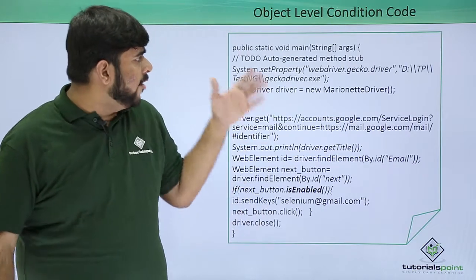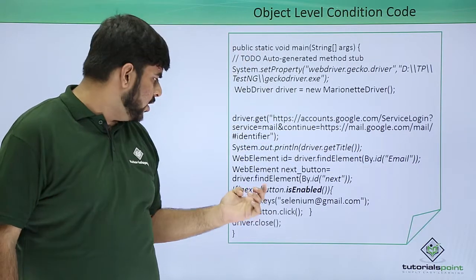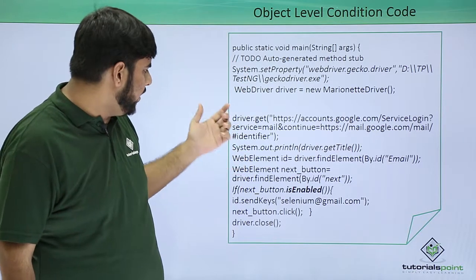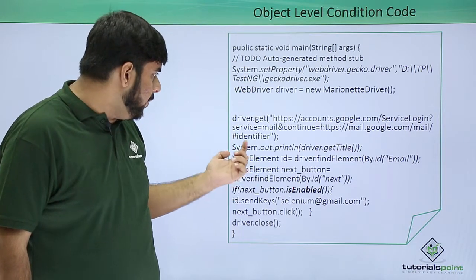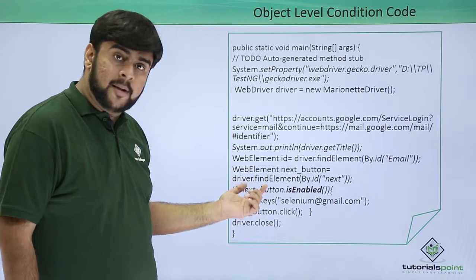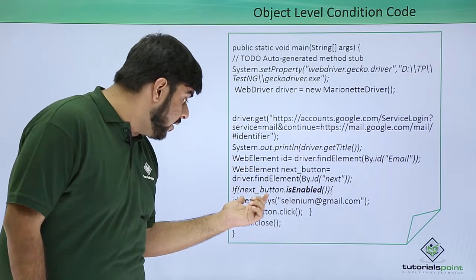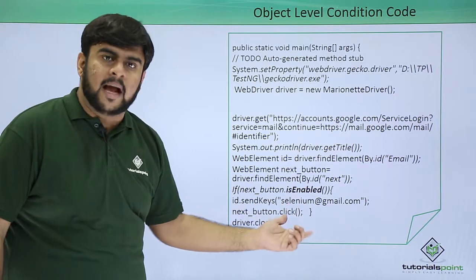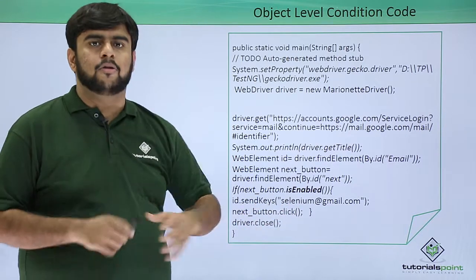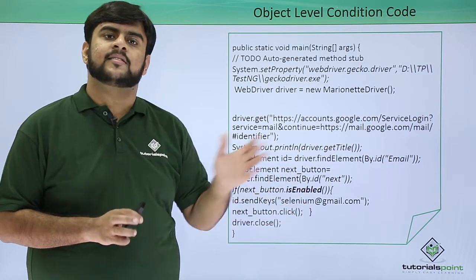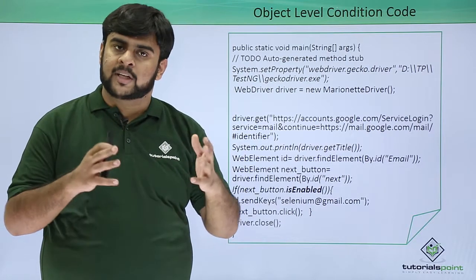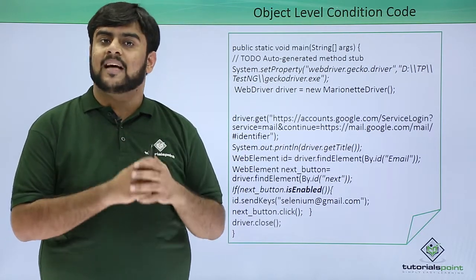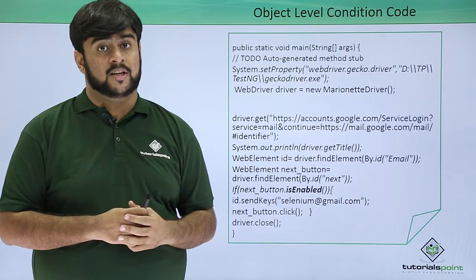In the coding part, for the object level condition, I have taken up a button as a web element and I am checking if this button is selected — then perform an action, else simply close the browser. All these things can be done using the object level conditions. Let's quickly go to our screens and see the working of object level conditions.